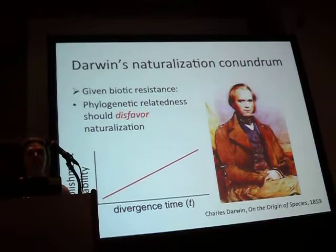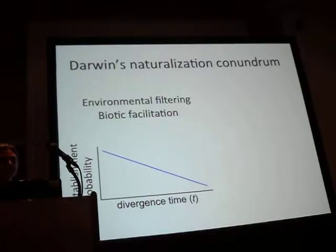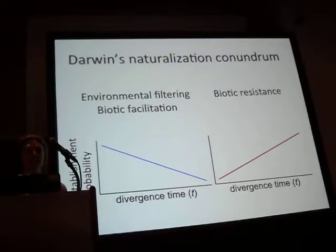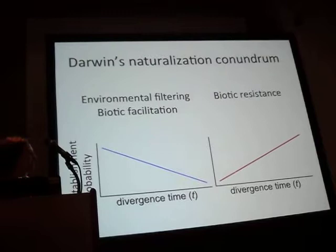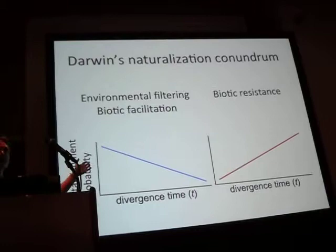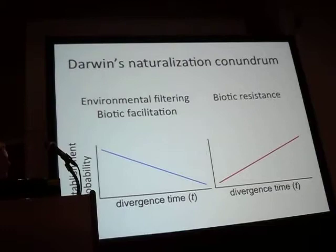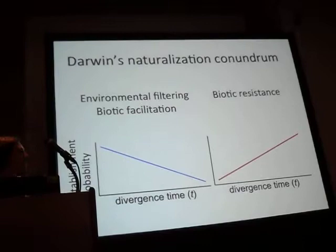There are two really opposite patterns that could be predicted when looking at the effect of phylogeny on establishment. For the information available to Darwin at the time, the evidence appeared to support the biotic resistance scenario, where competition is probably the most important thing. That was called Darwin's naturalization hypothesis. Since Darwin, there have been quite a few tests of this pattern.